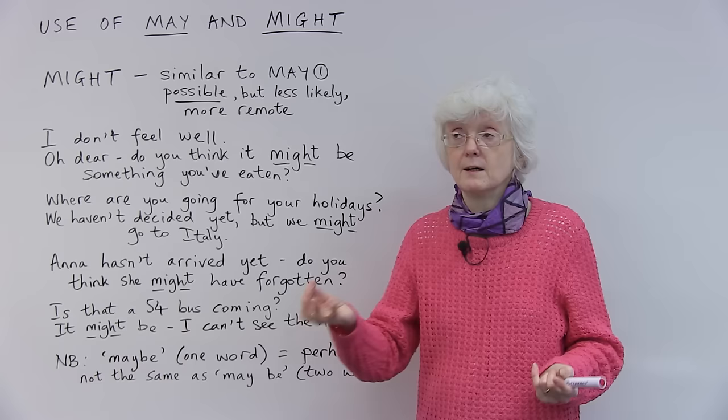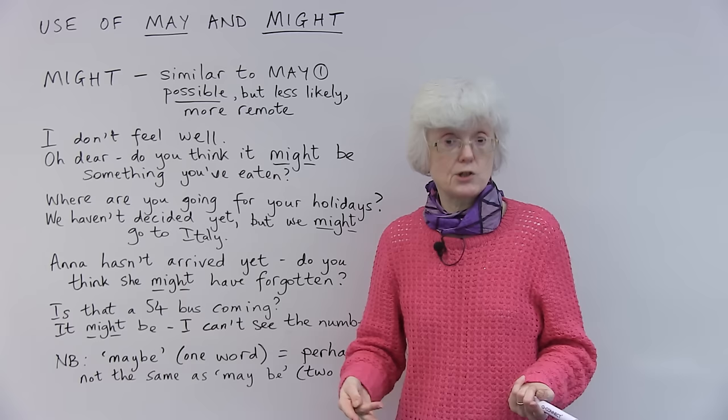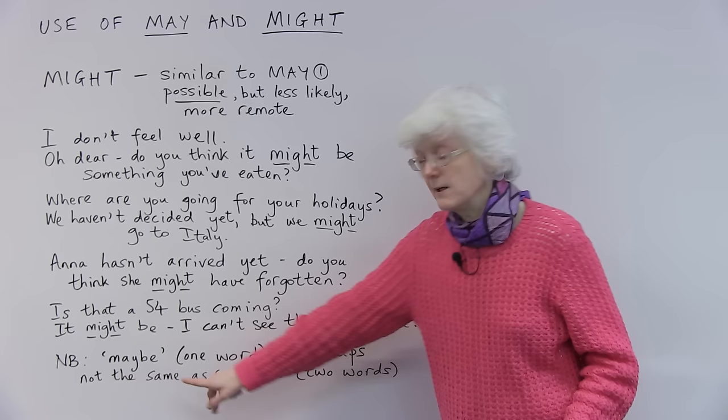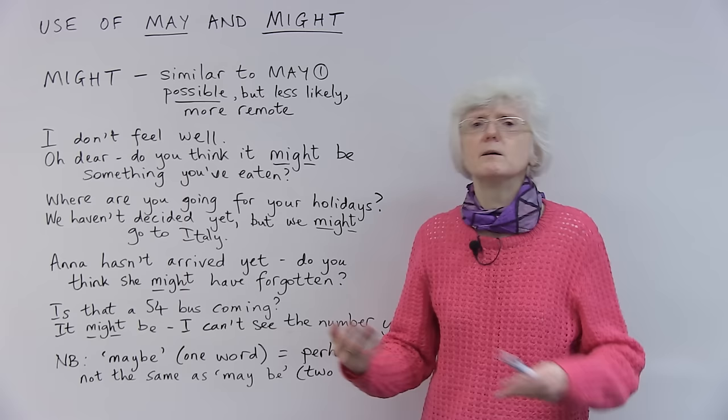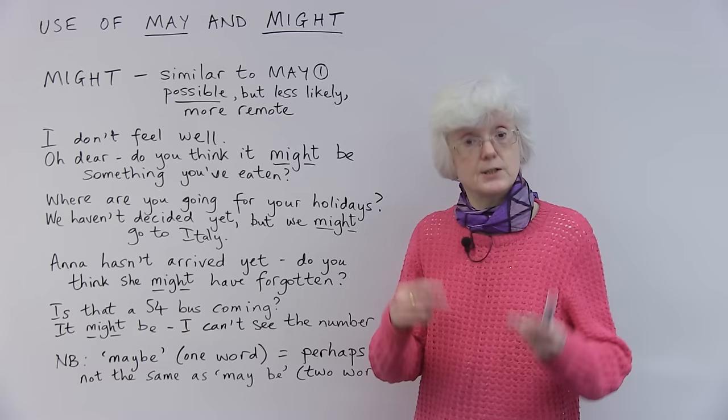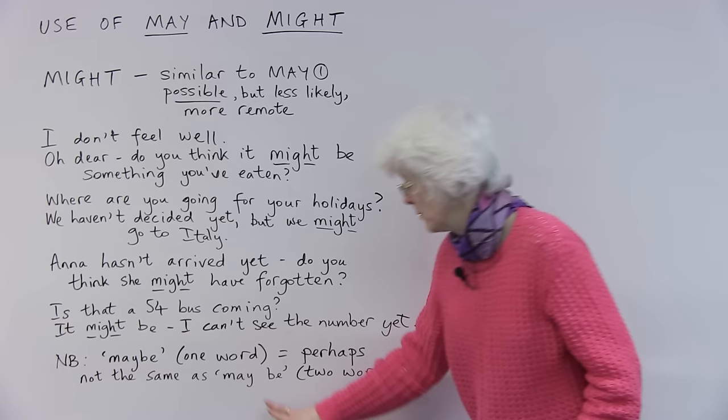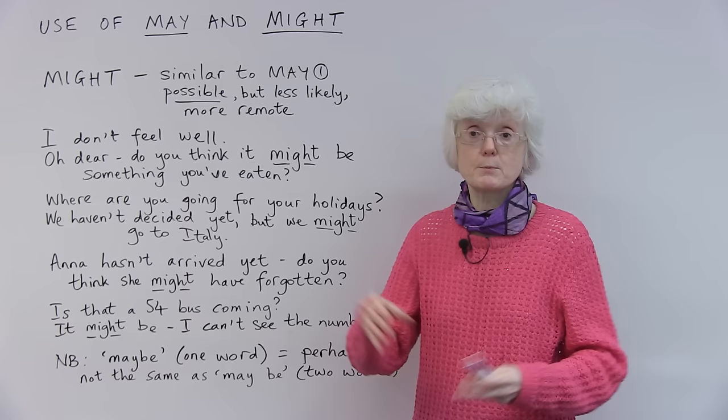And then just one final little note about the use of the word may with the word be. People tend to get this confused. Even native English speakers don't understand this. So maybe, if you say maybe, and if you write it as one word, it means perhaps. Again, it's the idea of what's possible. Perhaps. Maybe. Will we go to see a film tomorrow? Maybe. Maybe, which means perhaps. It's possible. But if you have a sentence which says, it may be raining tomorrow, that is two words. May be. Two words. It may be raining tomorrow. So it doesn't mean perhaps. You can't say it perhaps raining tomorrow. That doesn't work in English.